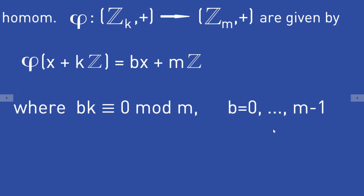The group homomorphisms phi from Z_K to Z_M are given by phi of (x + KZ) equal to B times x + MZ, where B can be a number from 0 to M minus 1 and must fulfill the condition that B times K is equal to 0 modulo M — in other words, M must divide B times K.